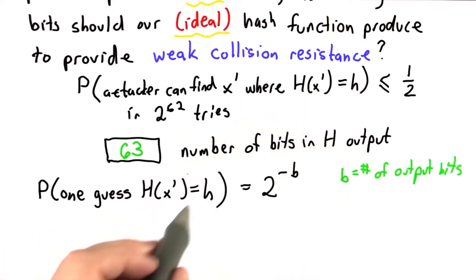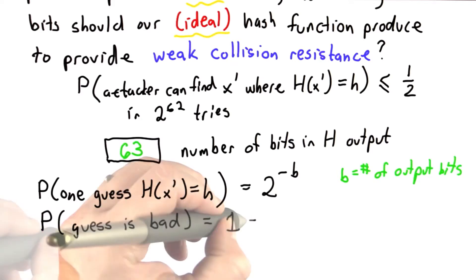So with our random oracle model, for any given guess the probability that it hashes to a particular value is 2 to the negative b. The probability a guess is bad is 1 minus that.